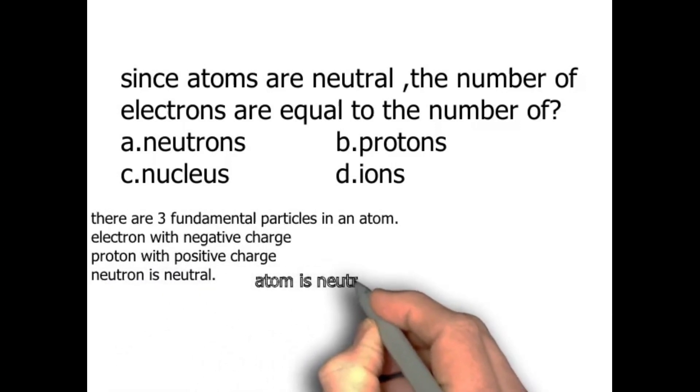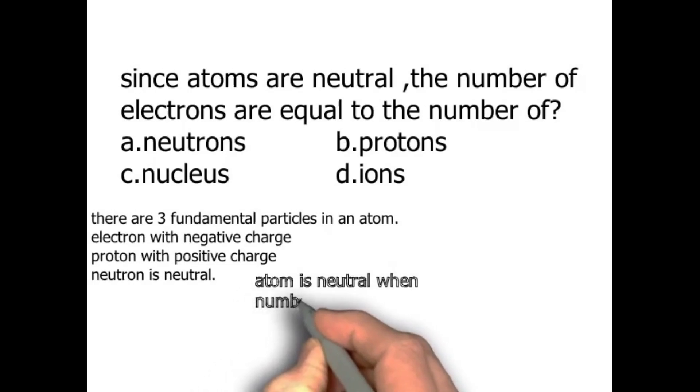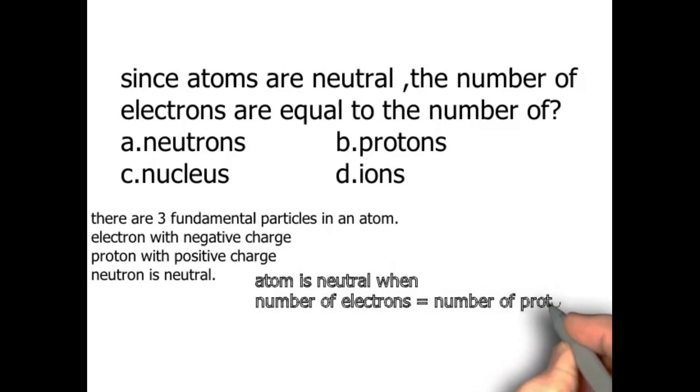Atom is neutral when number of electrons is equal to the number of protons. So, in any atom, there are three particles: electron, proton, and neutron.